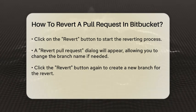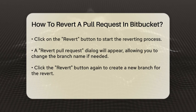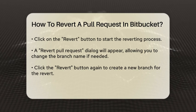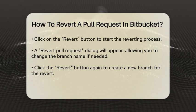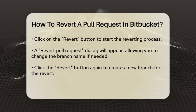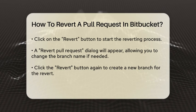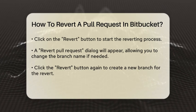Bitbucket will then create a new branch that contains a commit which reverses the changes made by the original pull request. This new branch will be used to create a new pull request.